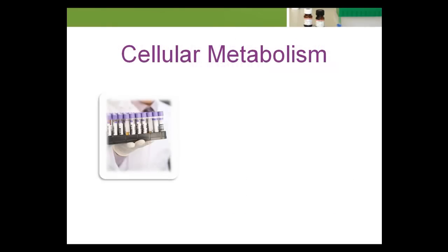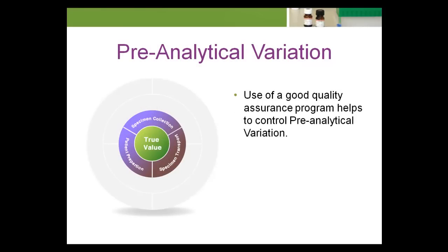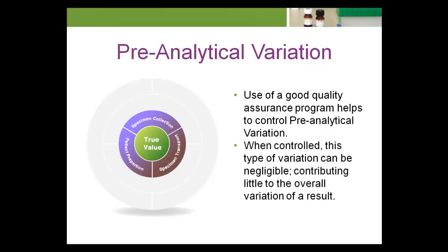Cellular metabolism within a specimen continues after collection. If there is either a significant delay in delivery, or for some analytes the sample is transported at the wrong temperature, there can be a significant impact on the results. Use of a good quality assurance program helps to control pre-analytical variation. When controlled, this type of variation can be negligible, contributing little to the overall variation of a result.